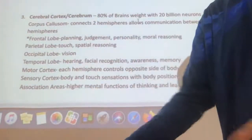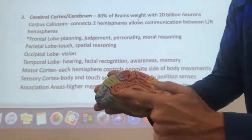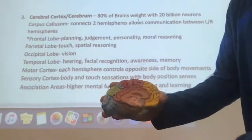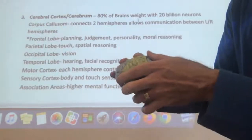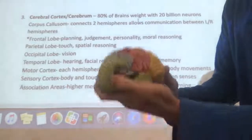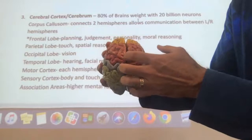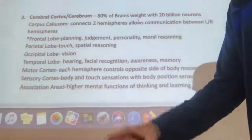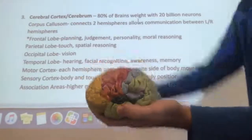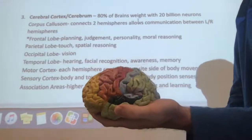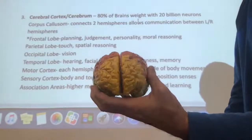The first structure to note is the corpus callosum — a huge band of fibers that connects the two hemispheres together and allows them to communicate, sending information to and from both hemispheres so we have a unified, working-together brain. Then we have the frontal lobe in yellow, which is very important to psychology. It deals with planning, judgment, personality, and moral reasoning — it has a lot to do with our behavior and mental processes.